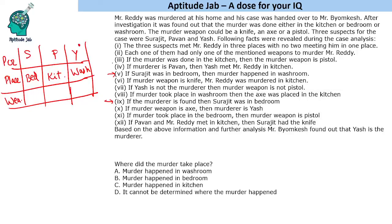Wherever the if-condition is false, the condition does not follow. For example, if the murderer is Pavan — we know he is not Pavan — so that condition is ignored. Similarly, if murder weapon is knife, then Mr. Reddy was murdered in the kitchen. But Mr. Reddy was not murdered in the kitchen — he was murdered in the washroom — so the murder weapon is not knife. It will be axe or pistol.